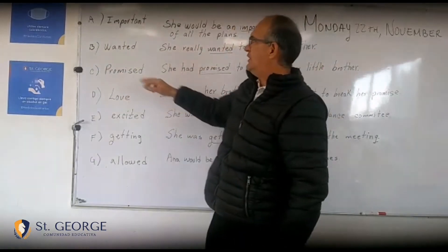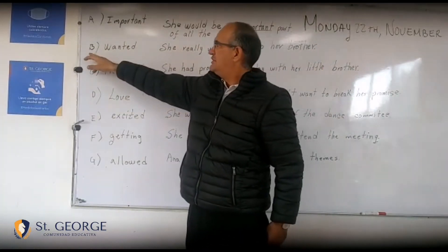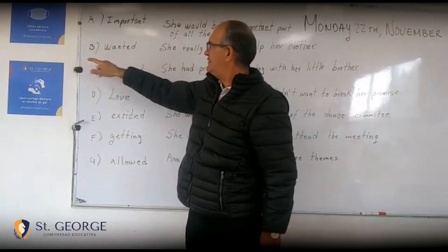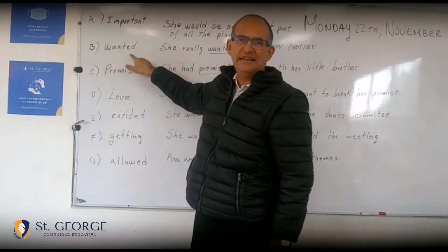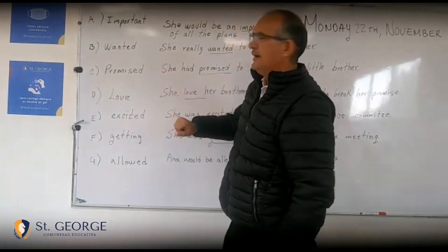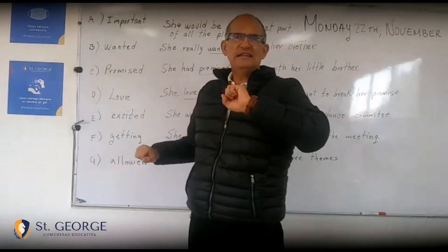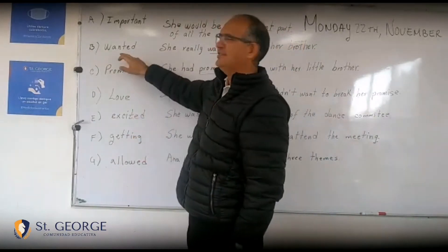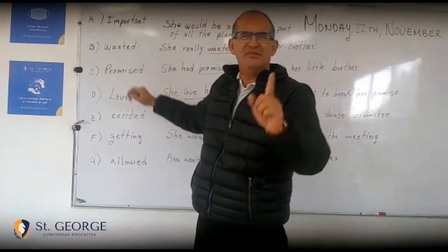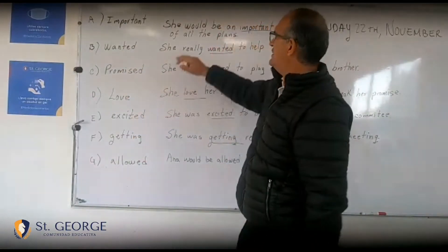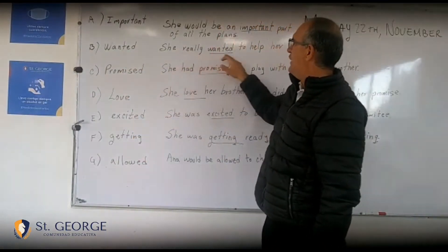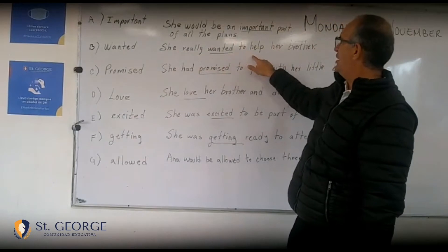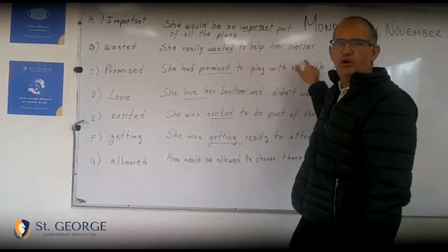Then we go to the other one, which is B: 'wanted.' How do you make a sentence out of this verb? Very easy: 'She really wanted to help her brother.'